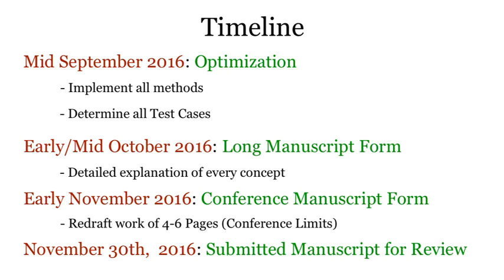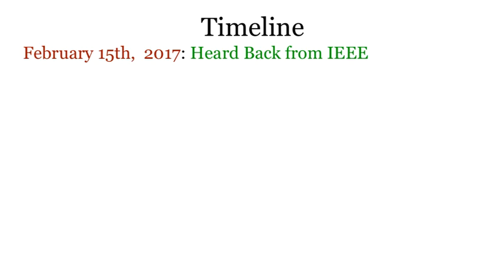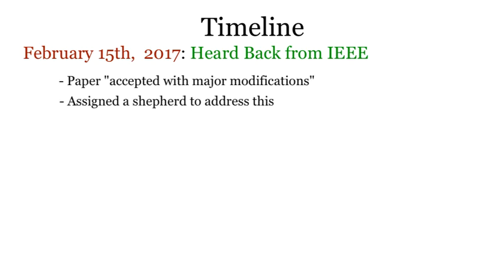The review committee consisted of four major panels. Each of them provided critical feedback on what a paper lacks and determines whether a paper is kept or trashed. It took them about two and a half months to get back to us — a long time. I heard back from them this February. My paper was accepted with major modifications, and we were assigned a shepherd who was a part of the conference committee.